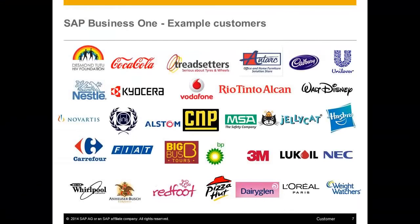With more than 42,000 customers now using SAP Business One, there are case studies and references across many different industries. These vary from small growing organisations through to mature, established businesses that benefit from the SAP Business One solution. In addition to many available references, SAP always maintains a comprehensive future roadmap for the Business One solution, detailing what can be expected in the upcoming major and minor releases of the product.